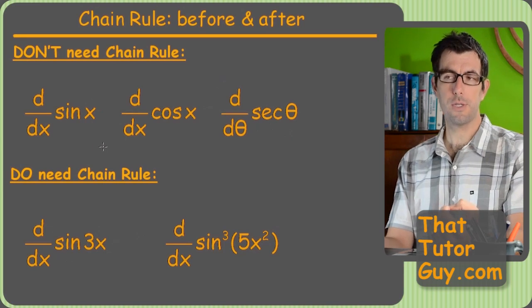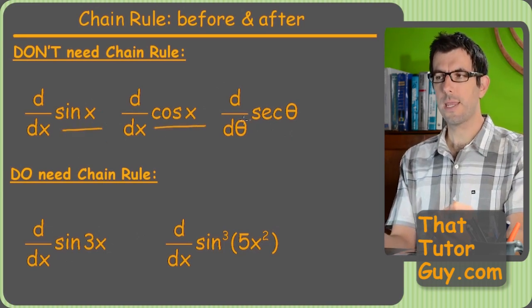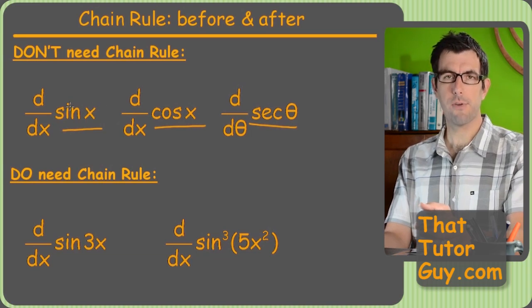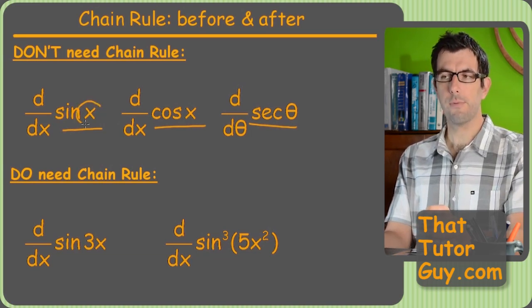All right, here's some trig formulas that did not need the chain rule. Sine x, cosine x, secant theta. These are all, the big deal is that after the sine or cosine or whatever, there was always just a single letter. We've got an x, we've got an x, we've got a theta.